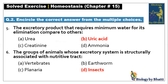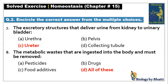You have to know that to remove 1 gram of ammonia you need 500 ml of water; for urea, 1 gram requires 50 ml; whereas uric acid — 1 gram requires only 1 ml of water. MCQ number 6: the group of animals whose excretory system is structurally associated with the nutritive tract — insects where excretory and digestive systems are connected — so it should be D option.